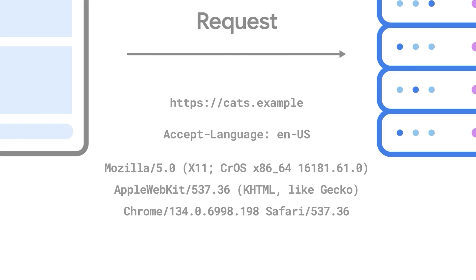This header provides details about the user's browser and operating system. In this case: Mozilla/5.0 — that's the browser family — CROS, which means Chrome OS operating system, and Chrome/134.0.6998.198 — that's the browser version. A server might access the user agent string to serve different files for users on different platforms.